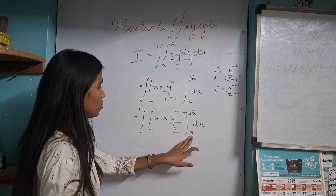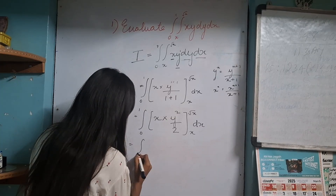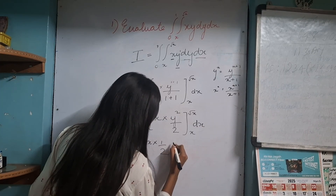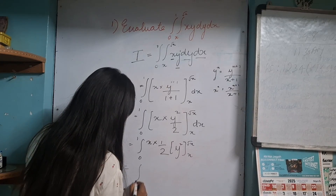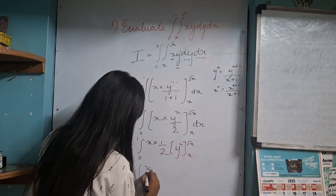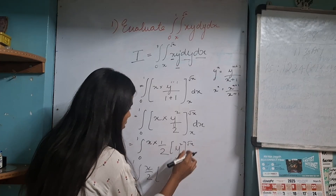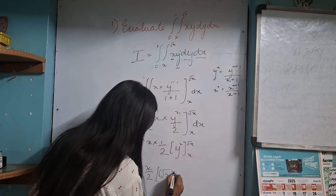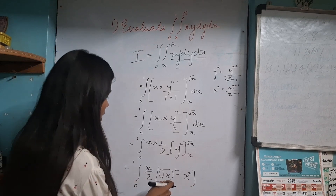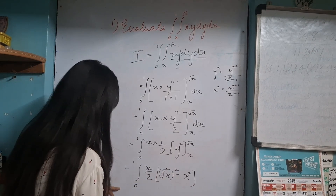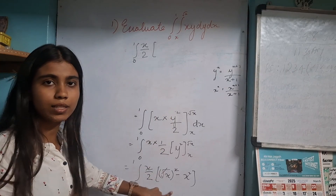Next, you have to substitute the limits. Before substituting, I will keep only the y term, so I remove 1 by 2 outside. Here only y squared is remaining, with limits x and root of x. Further simplifying, we get x into 1 by 2, which gives x by 2. For y squared, substitute the upper limit first: root of x squared, minus the lower limit x squared. You can simplify by cancelling the root terms, giving x by 2 in bracket, which becomes x minus x squared.